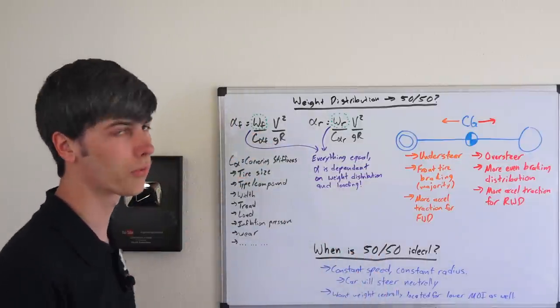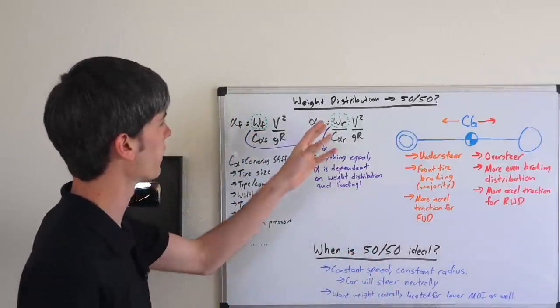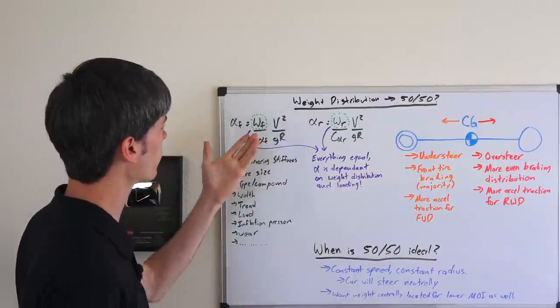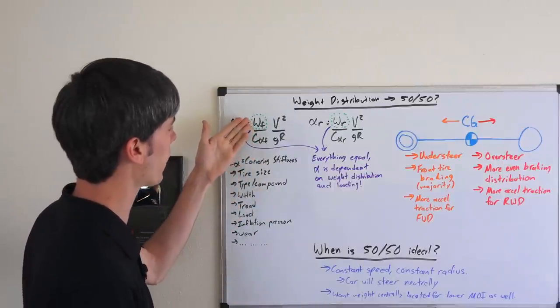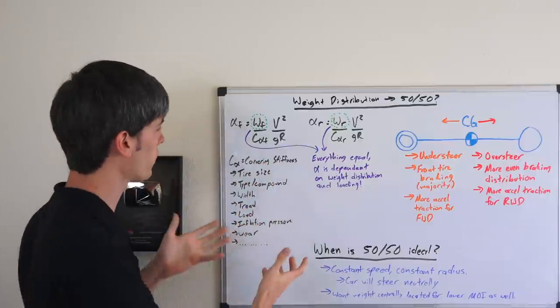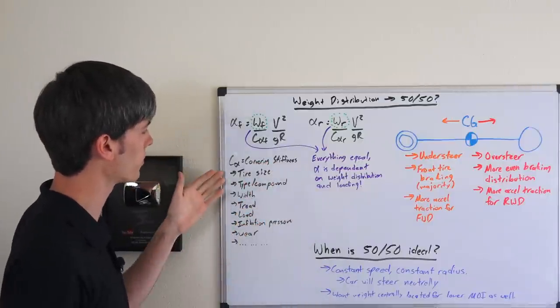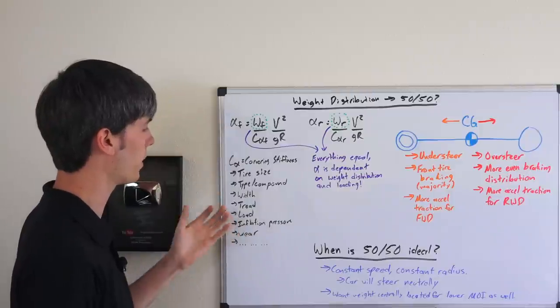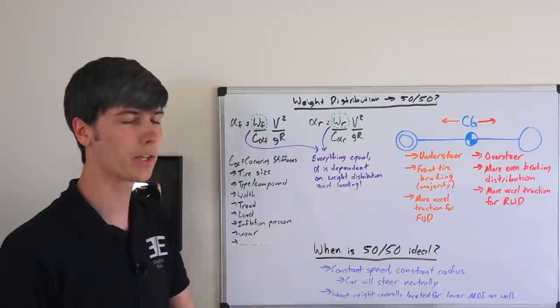Now looking at the equation for the front slip angle of the car and the rear slip angle, you can see it's the weight on the front axle divided by the cornering stiffness. The cornering stiffness is a property of the tire and it comes down to many factors: tire size, compound, width, tread, load, inflation pressure, wear and a bunch of other factors.